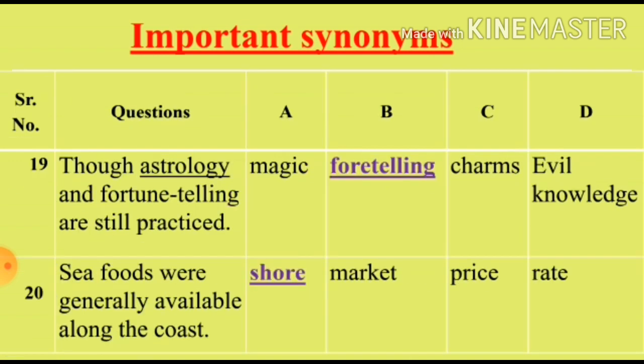Question 19: 'Though astrology and fortune telling are still practiced.' We will see the correct synonym for the word 'astrology'. Option A: Magic (jadu). Option B: Foretelling (predict karna, paish goi karna). Option C: Charms (taviz). Option D: Evil knowledge (aisa ilm jo fayda na deta ho, nuqsaan deta ho). Options A and C are totally irrelevant. We will select from Option B and D. Option B, Foretelling, is the right synonym for the word 'astrology'.